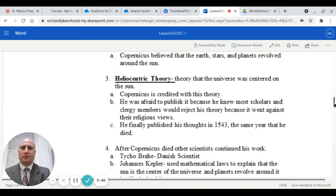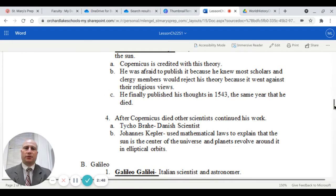There were others that thought about this as well. He was actually afraid to publish it because he knew most scholars and clergy members would reject his theory. It actually went against most of their religious views. He finally did publish his thoughts in 1543, the same year that he died. It's said that he wanted to go forward with this on his deathbed to avoid persecution from the church and other entities.